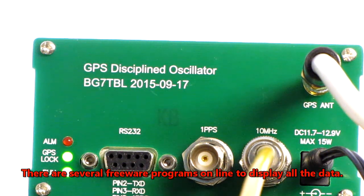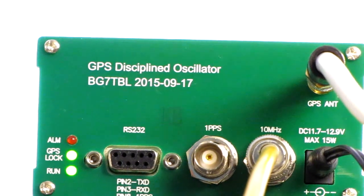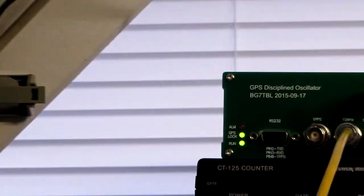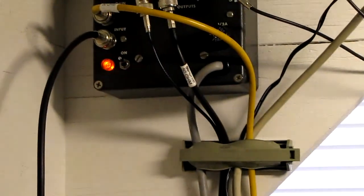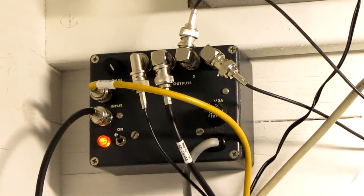It has a one pulse per second output so you can use that to clock other items. It has an RS-232 output. You can take a look at what satellites you're tracking. It just sits there 24/7 consuming a couple of watts and supplying everything. I run it all through a distribution amplifier right here, and that's a 75-ohm distribution amplifier.